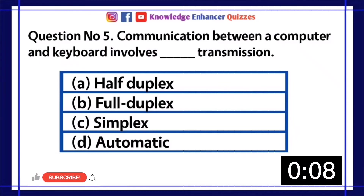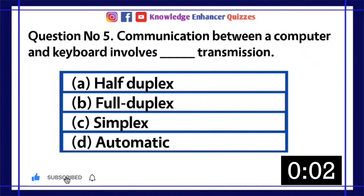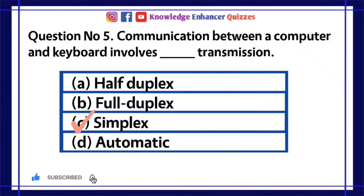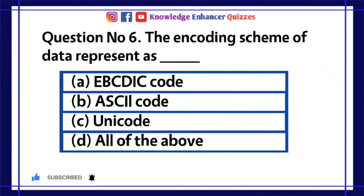Question number 5: Communication between a computer and keyboard involves dash transmission. A. Half duplex. B. Full duplex. C. Simplex. D. Automatic. Option C is the right answer.